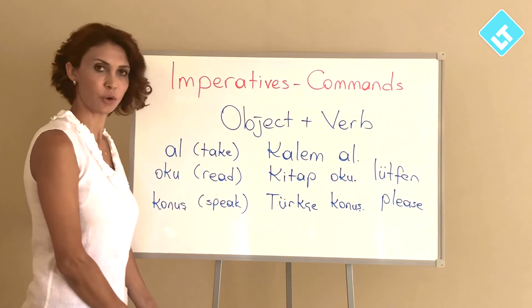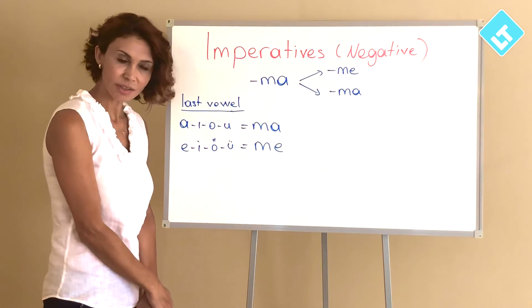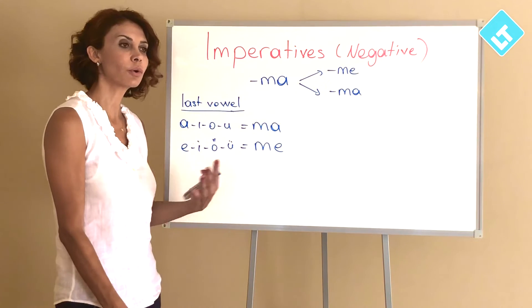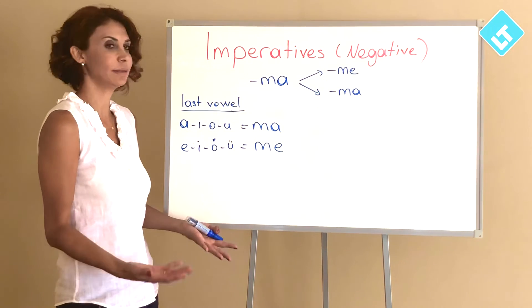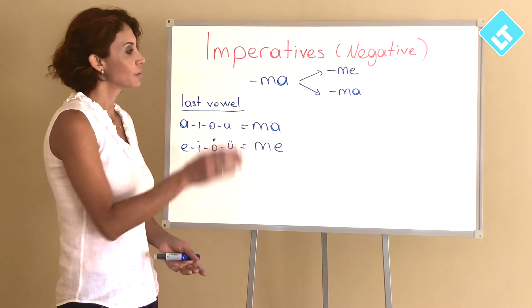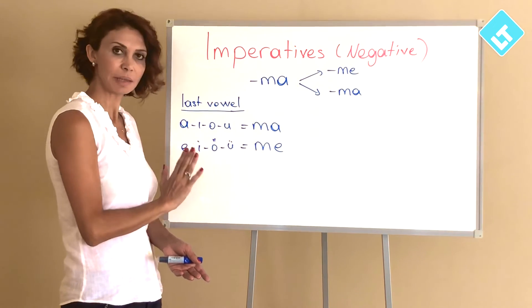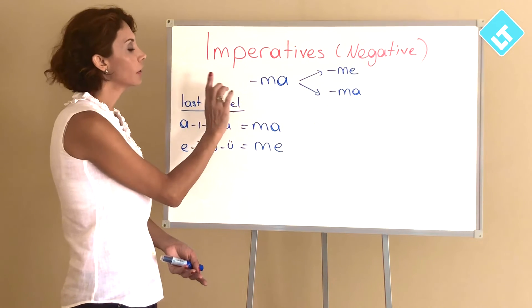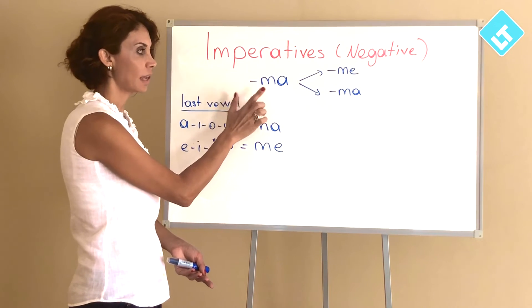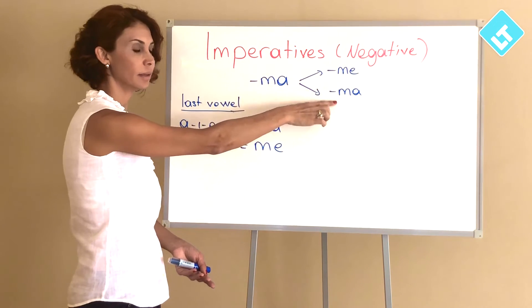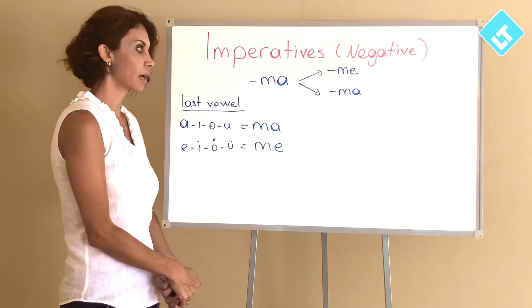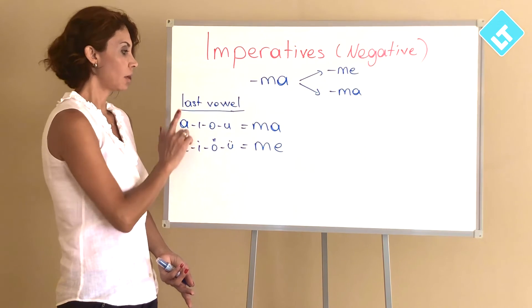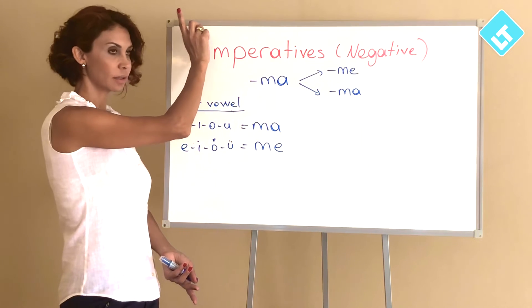Lütfen Türkçe konuş. Now I will teach the negative form, like how to say don't. Don't go. Don't come. Don't eat. To form negative imperatives we simply add negative suffix to the verb stem. Our negative suffix is -ma, and this suffix has two forms: me and ma. This suffix changes according to two-way vowel harmony.